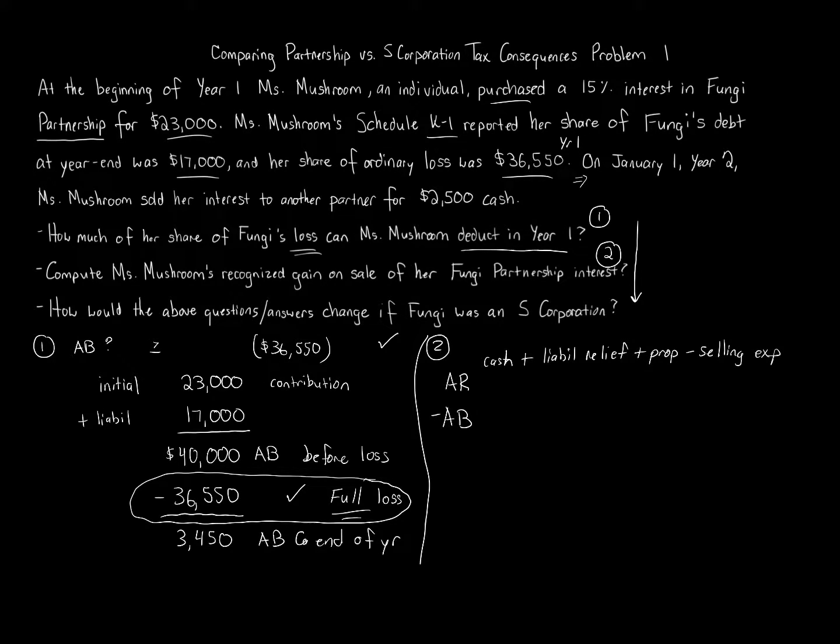So the only thing that we're told here is we have $2,500 of cash. That's what's being sold for. And then there's also liability relief. If Ms. Mushroom is selling her entire interest to another partner, we've got $2,500 cash. And then remember the $17,000 share of liabilities? That's liability relief. Because Ms. Mushroom is no longer responsible for that. So that's where a lot of students get confused. That $17,000, that's now liability relief. That's now considered amount realized. There's no other property being received by Ms. Mushroom. And there's nothing about selling expenses. Selling expenses would be like if you're selling your home. Let's say you pay a realtor or a lawyer to draft up contracts or pay them a commission. That's an example of selling expenses.